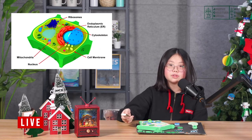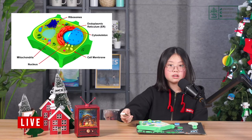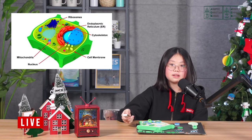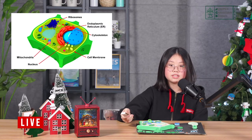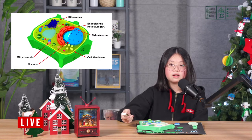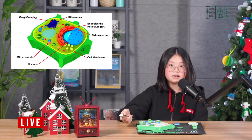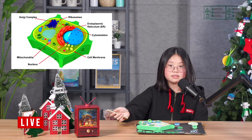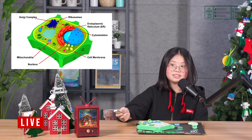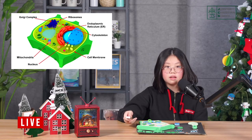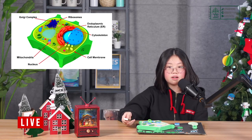Endoplasmic reticulum, which is called ER. This makes lipid and processes and transports protein. Golgi complex. Golgi complex is called the post office and it delivers material in and out of the cell.